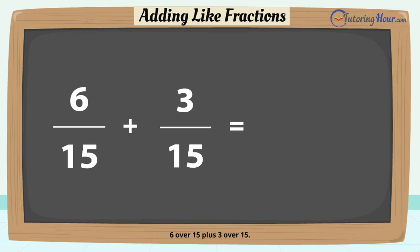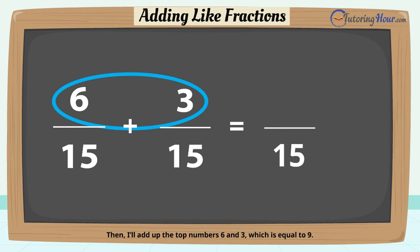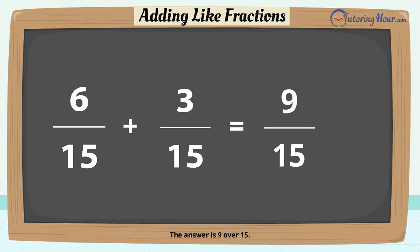Six over 15 plus three over 15. Both the fractions have the same denominators, 15. I'll write that down. Then I'll add up the top numbers, 6 and 3, which is equal to 9. The answer is 9 over 15.